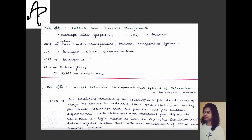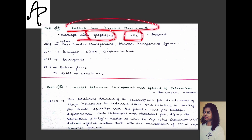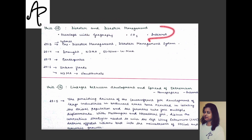The next unit on disaster management also overlaps with geography, which I have explained in the geography section. Current affairs are of greater importance here because whichever disaster is in the news will most likely have a question asked about it. You also need to know the static background and recent guidelines. Overall, there is not much to worry about here, and the internet will be of great help.